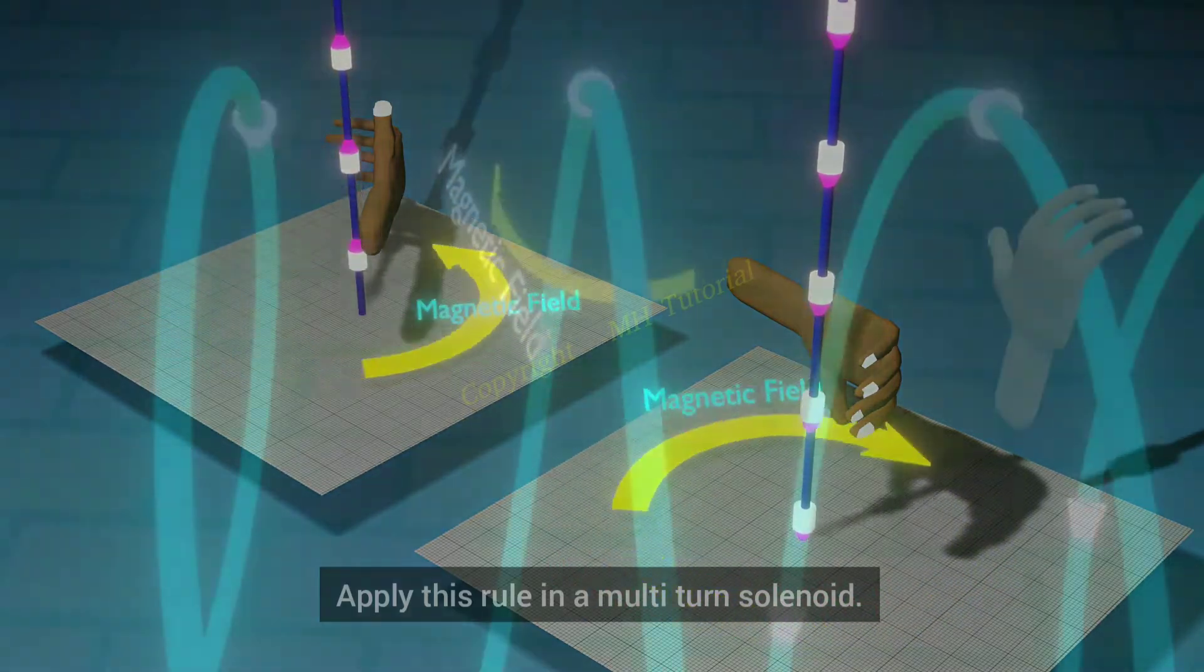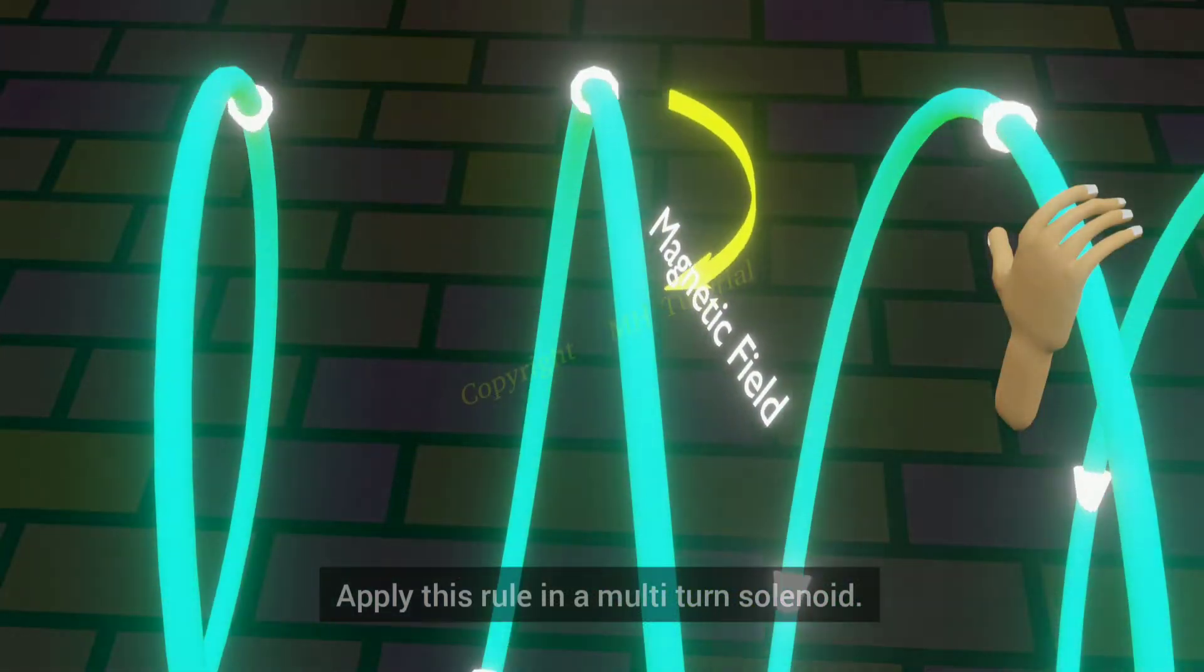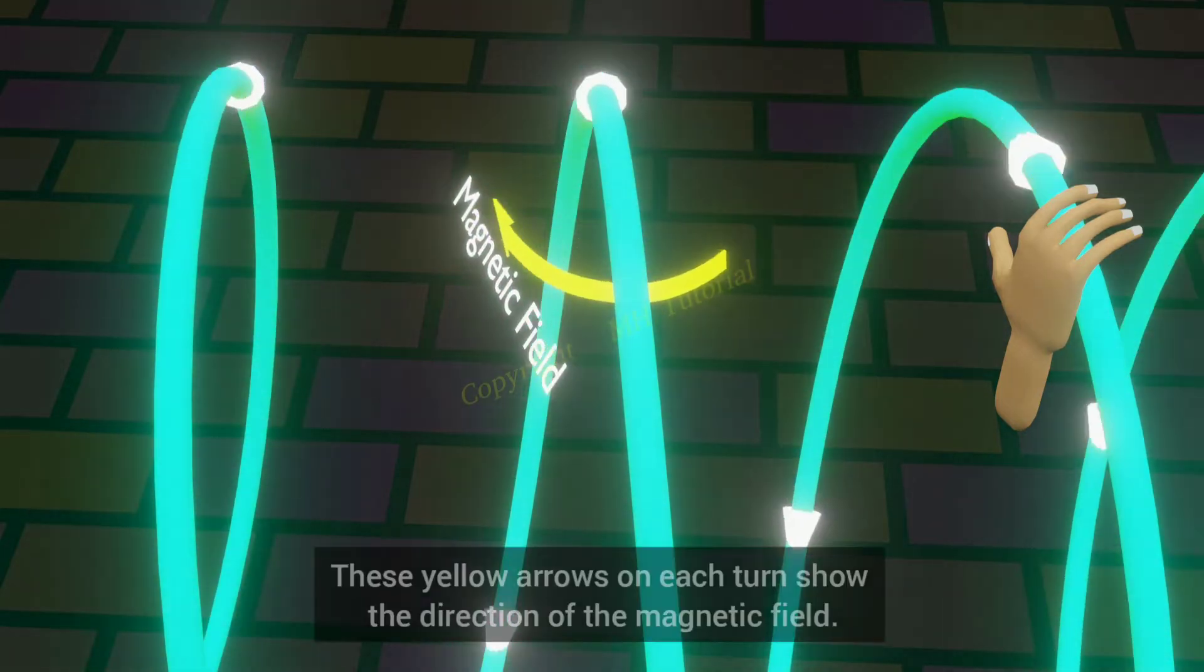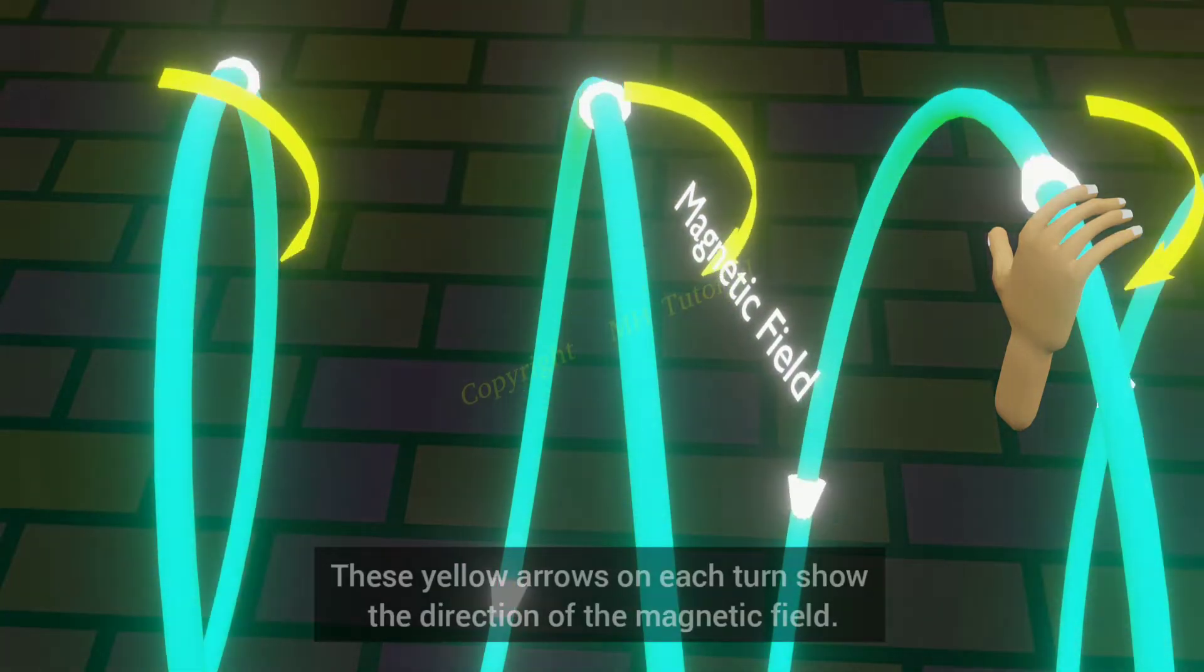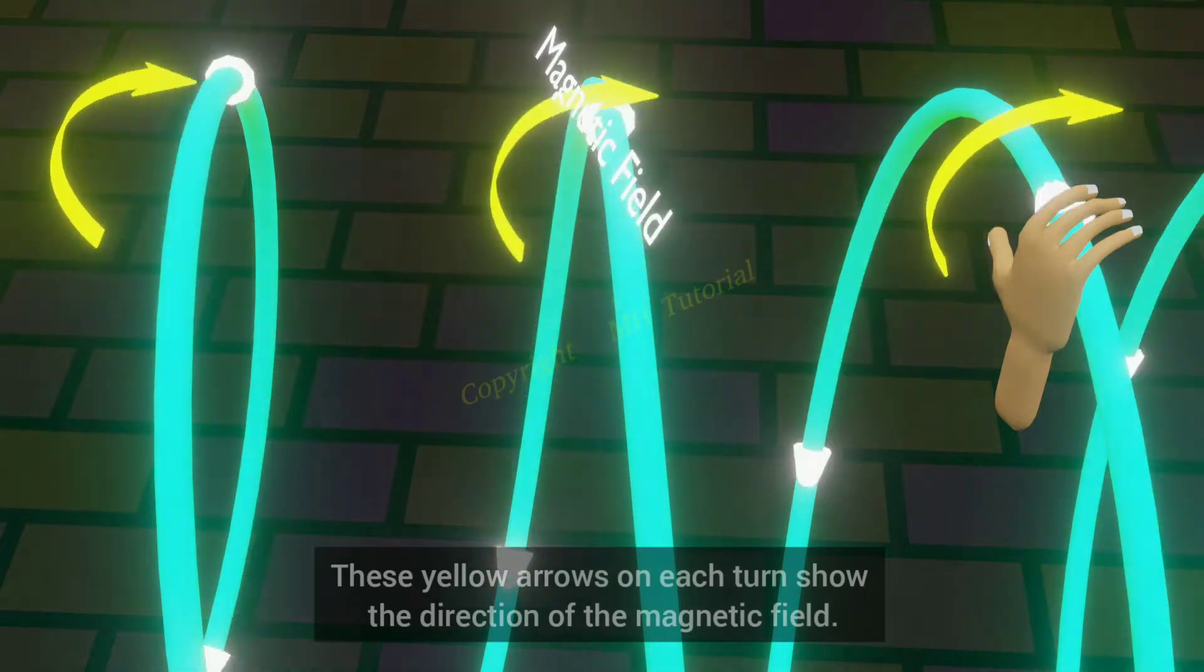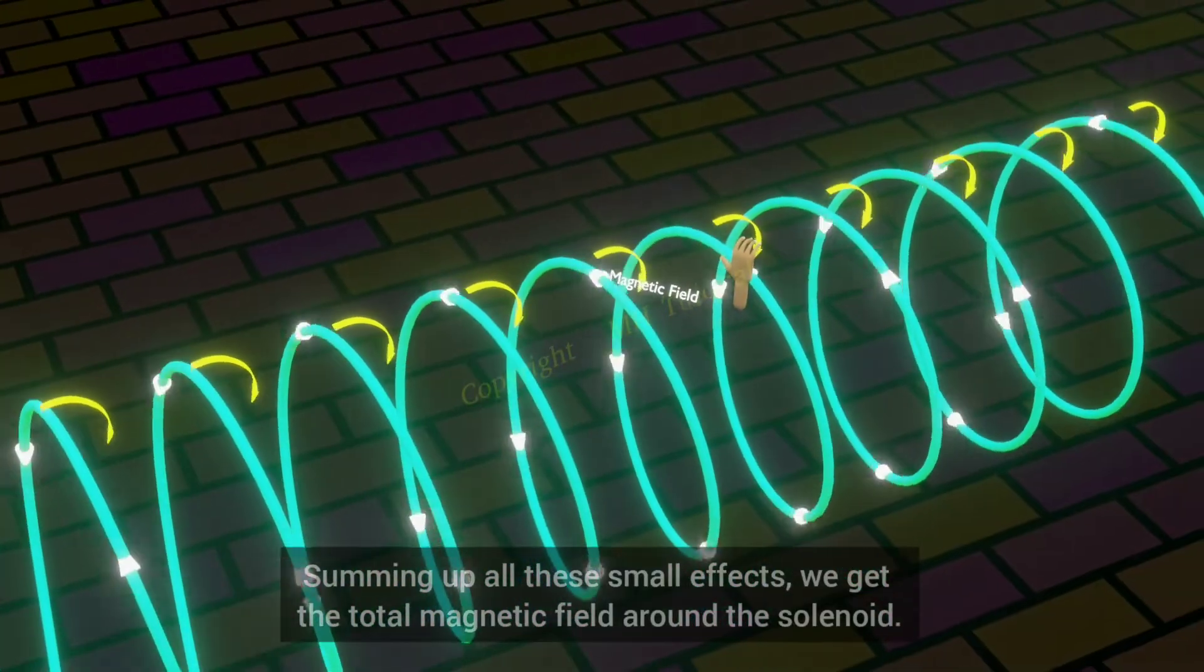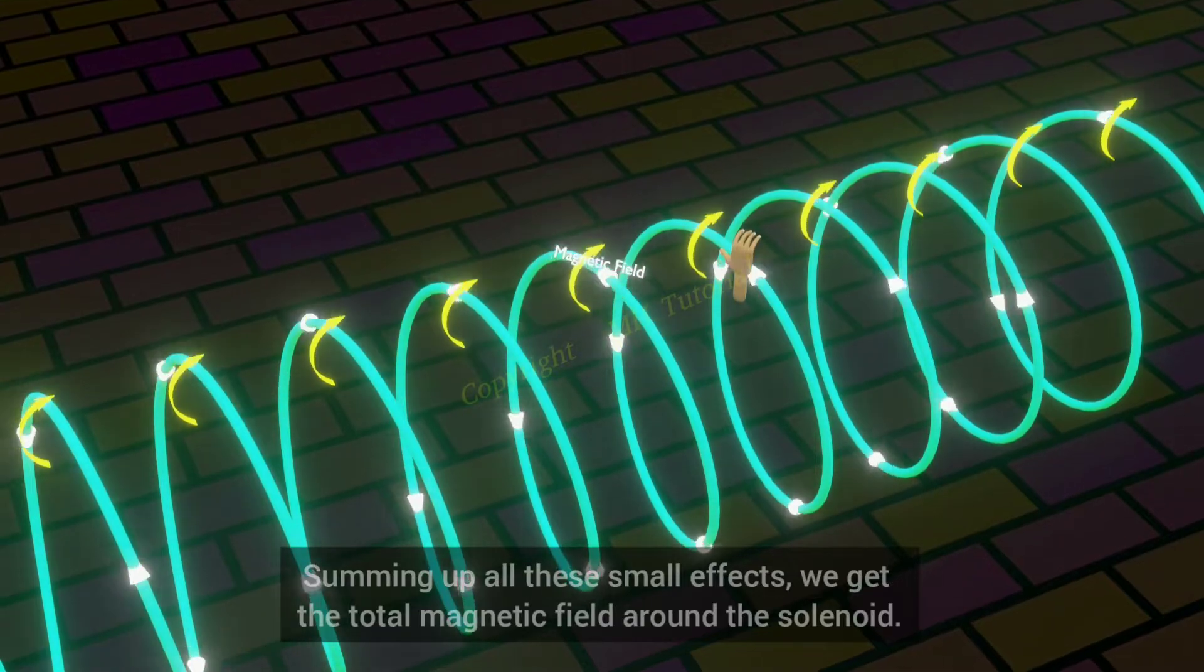Apply this rule in a multi-turn solenoid. These yellow arrows on each turn show the direction of the magnetic field. Summing up all these small effects, we get the total magnetic field around the solenoid.